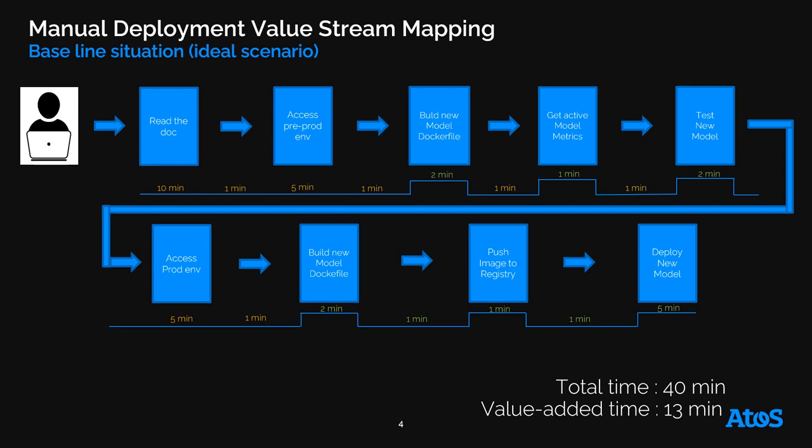With this diagram, you need to understand that the starting point is the developer who wants to deploy a model. In process terms, this first involves reading the documentation — sometimes overlooked but important and time-consuming. Once that's done, you access the production environment, build the new model Docker images, then get the active model metrics. Finally, you test the new model, and if it performs better than the active one, you deploy it into production by building the model image, pushing it to the model registry, and deploying the new model to make it the new active model.